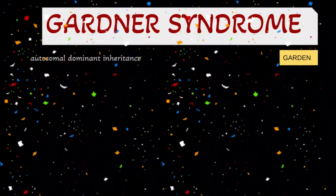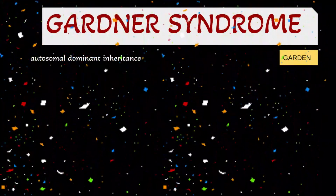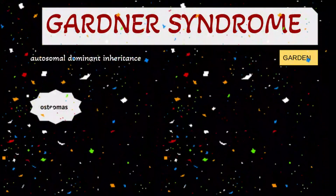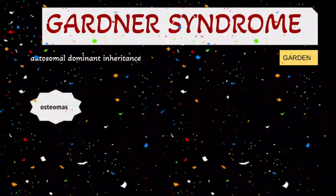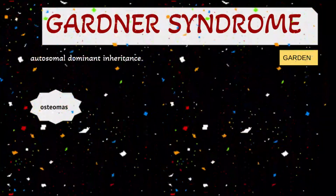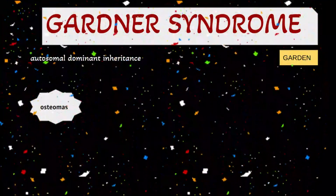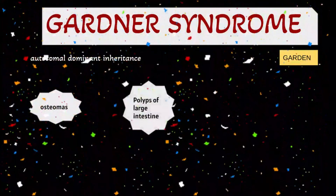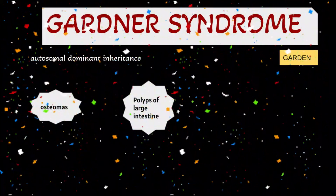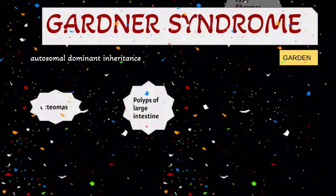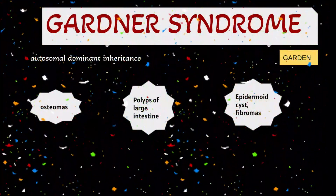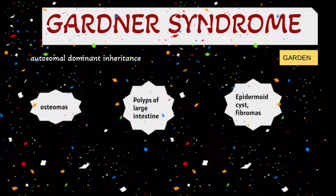This autosomal dominant inherited syndrome has lesions which are overgrowths — for example, overgrowth of bone causing osteomas, overgrowth of large intestine tissue causing polyps of the large intestine, and overgrowths of skin causing epidermoid cysts and fibromas.